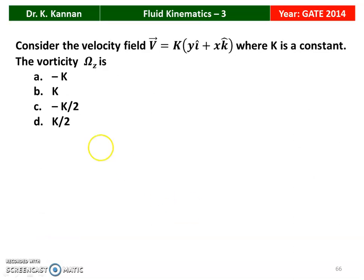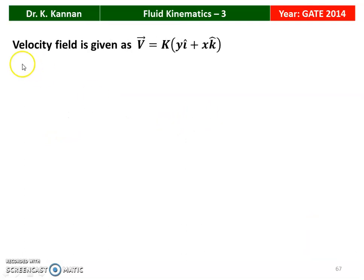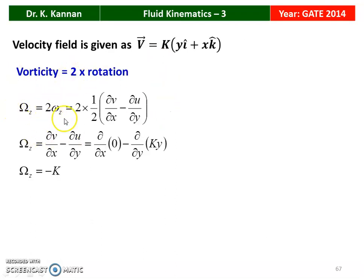The next question from the 2014 question paper: consider the velocity field V = K(Y·î + X·k̂), where K is a constant. The vorticity ψ_Z is to be found, with options -K, K, -K/2, K/2. The correct answer is -K. Using ψ_Z = 2ω_Z = ∂V/∂X - ∂U/∂Y: substituting gives ∂(0)/∂X - ∂(KY)/∂Y = 0 - K = -K. Therefore, the vorticity equals -K.